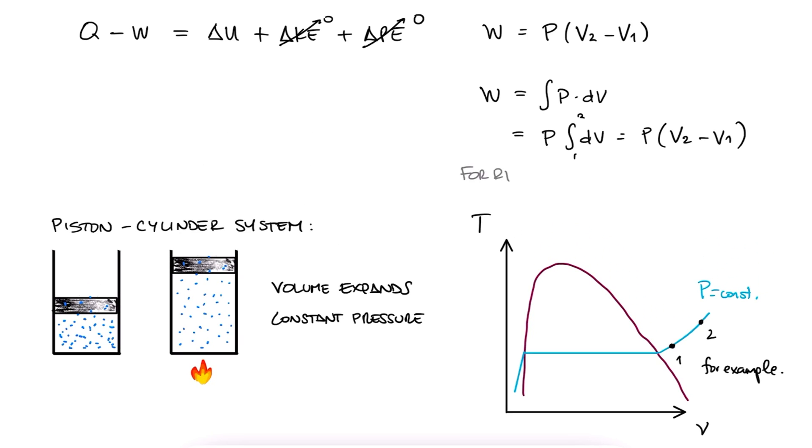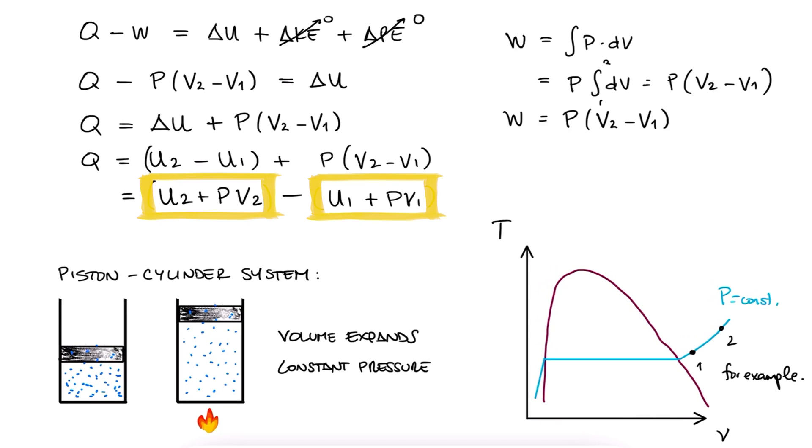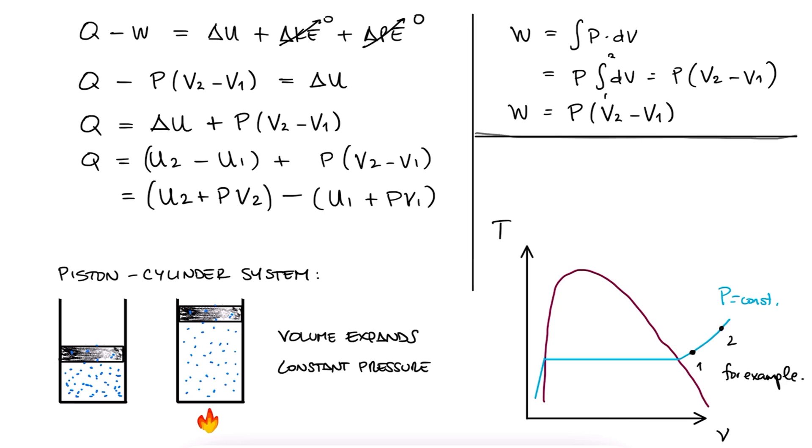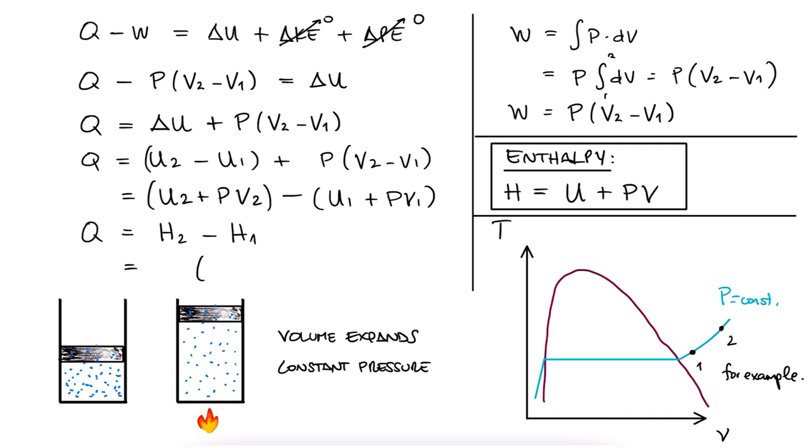In the case of a rigid tank at constant volume, we just concluded that the heat transfer was equal to the change in internal energy. In this case, the heat transferred must be equal to the change in internal energy plus the PV terms. Rearranging the values here, we see that what describes the state at 2 and the state at 1 are the same two terms, and this combination of internal energy and P times V is so common in so many applications that this is what we call enthalpy. Therefore, Q is equal to H2 minus H1, where H, or enthalpy, is equal to the specific enthalpy times the mass. In general, enthalpy reflects the capacity to release or gain heat while doing non-mechanical work.